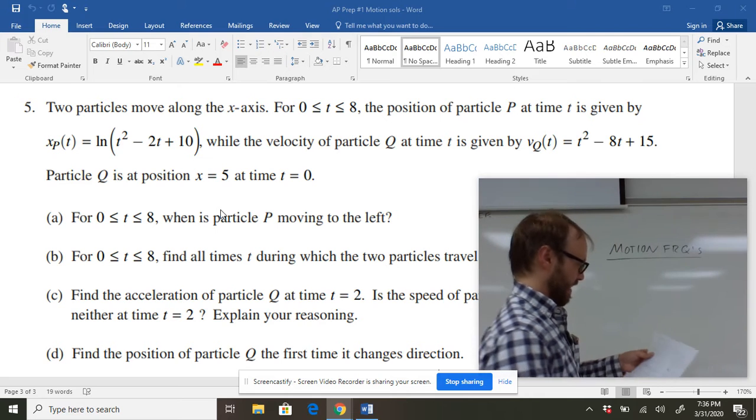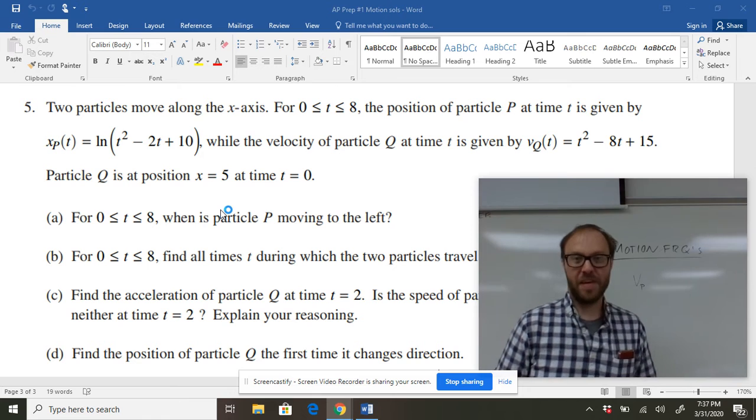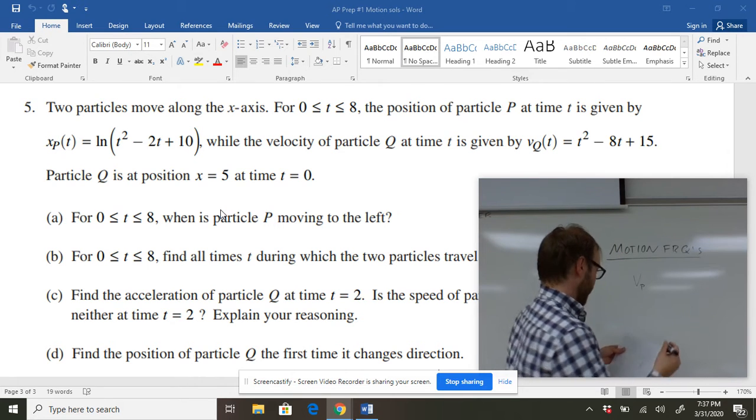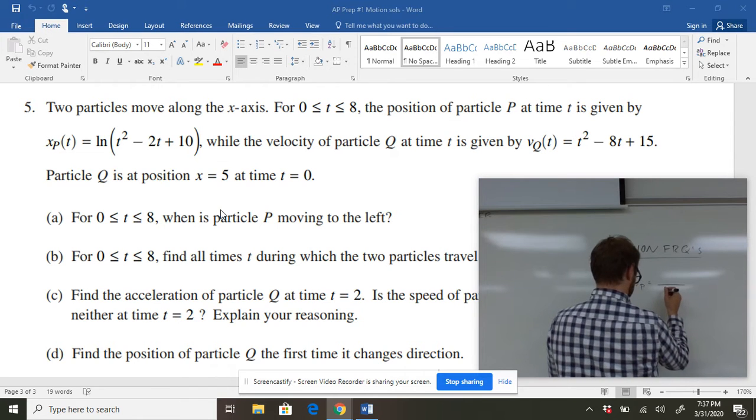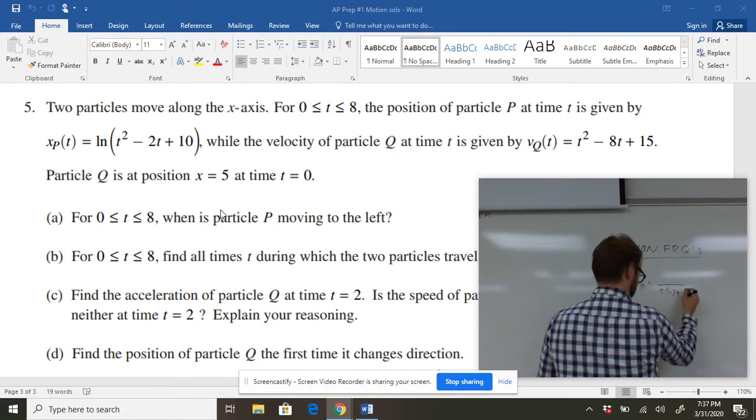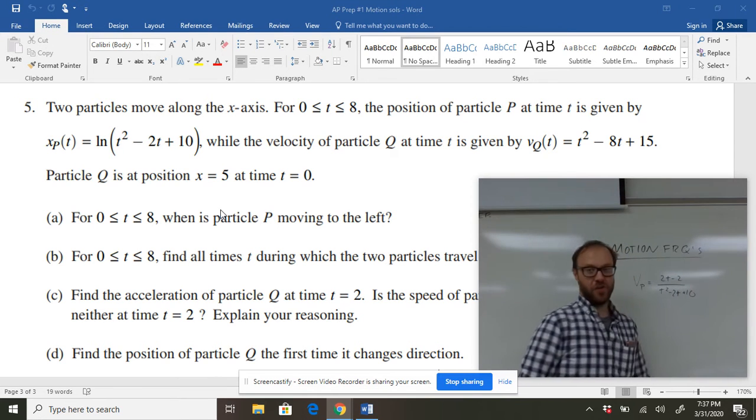For P's velocity, I'm going to call that V sub P, we're just going to take the derivative of that P function. And that's a natural log function, so it's going to be the reciprocal. So you're going to have T squared minus 2T plus 10. And you have to multiply by the derivative of the inside function, so 2T minus 2.